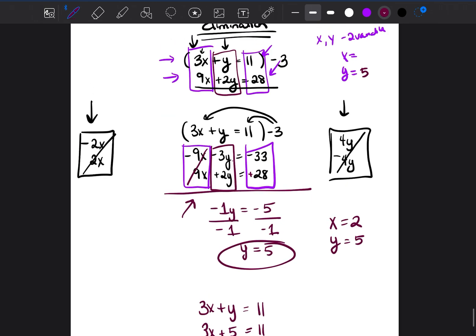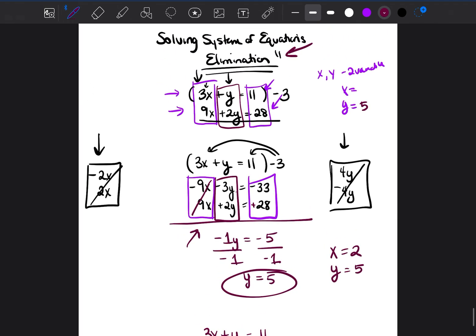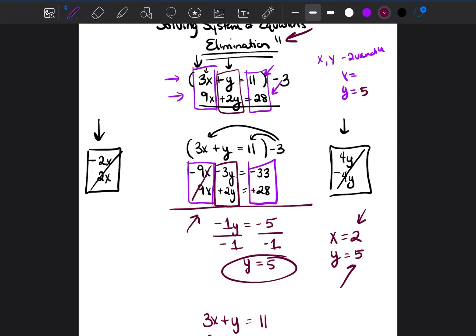We just solved a system of equations by elimination. We were able to find what x is equal to and what y is equal to. Now, if we're going to give that answer, sometimes the teacher will ask, or the professor or the test taker or whatever you're doing will ask to put it as a point. You write it as an x, y point, which would be 2, 5.